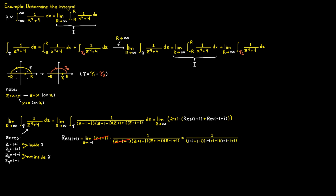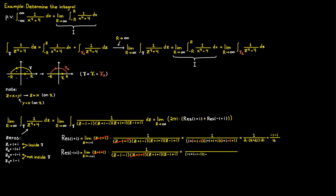We simplify the residue at 1+i by eliminating terms, and end up with minus 1 minus i divided by 16. We do the same for our second residue at minus 1+i: after eliminating common factors and taking the limit as c approaches minus 1+i, we simplify to get 1 minus i divided by 16.